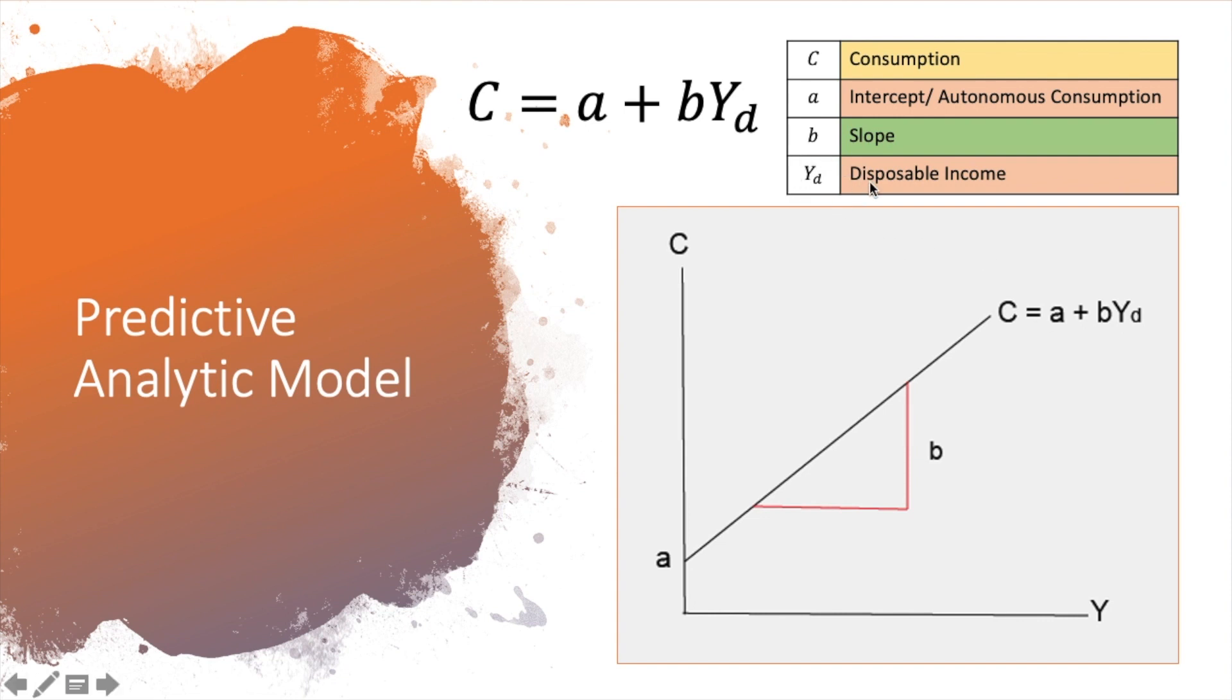And Y here refers to disposable income. So in this case, we can see it's a linear function where there is a positive relationship between disposable income and consumption.